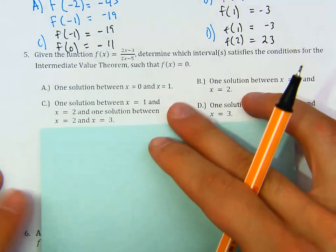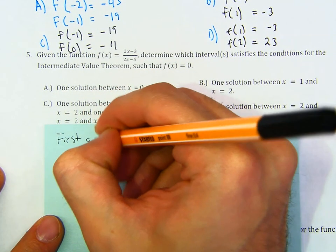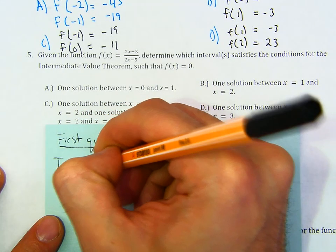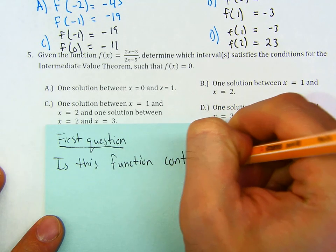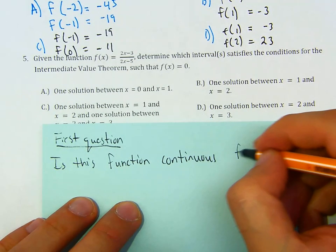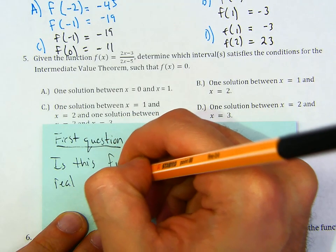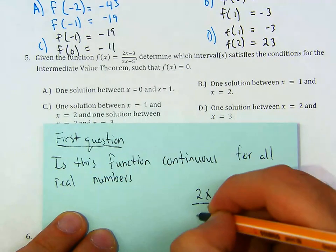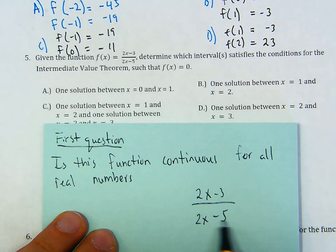First question: is this function continuous for all real numbers? For the function 2x minus 3 over 2x minus 5, are you allowed to use any x value? If you can't use an x value, what is it? Notice that the denominator can't be 0.